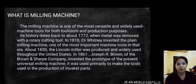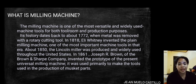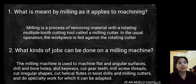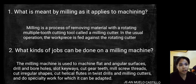Milling Machine Processes. The milling machine is one of the most versatile and widely used machine tools for both tool room and production purposes. Milling is a process of removing material with a rotating multiple-tooth cutting tool called a milling cutter. In the usual operation, the workpiece is fed against the rotating cutter.